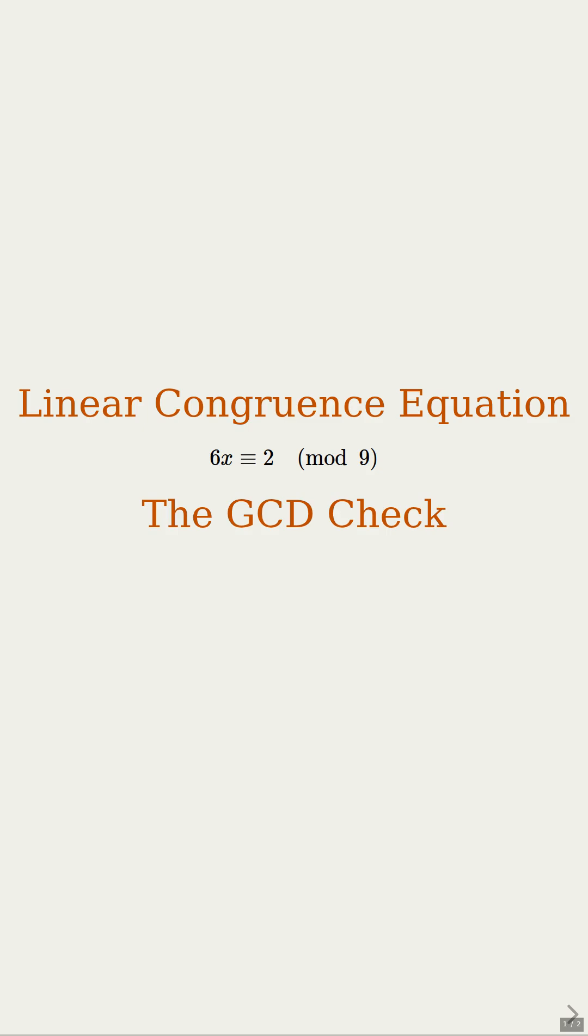I'm stuck on this. 6 times x is congruent to 2 modulo 9. Can we even solve it?